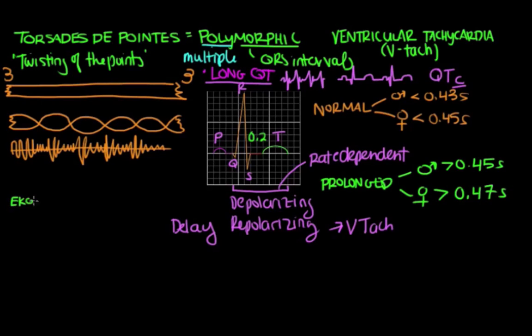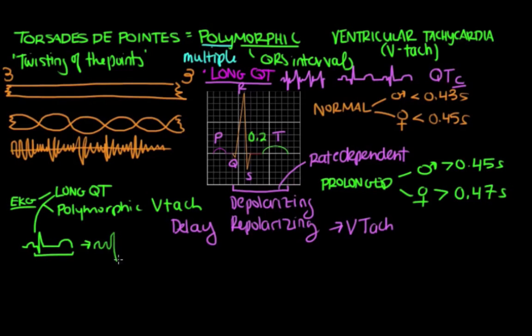So remember, on EKG, someone with torsades, you're going to have the long QT syndrome, or you're going to have a prolonged QT, and you're also going to have this polymorphic ventricular tachycardia. So you'll have the long QT and the polymorphic V-tach. Now having a long QT doesn't usually give you symptoms to come into the hospital. However, people who are experiencing a ventricular tachycardia might have symptoms where they want to come into the hospital. So often, they present in V-tach, and you're not going to see the long QT on EKG. What you can do, though, is look at old EKGs, and you can look at the old EKG and see if you notice a prolonged QT interval, which has now turned into this polymorphic V-tach.